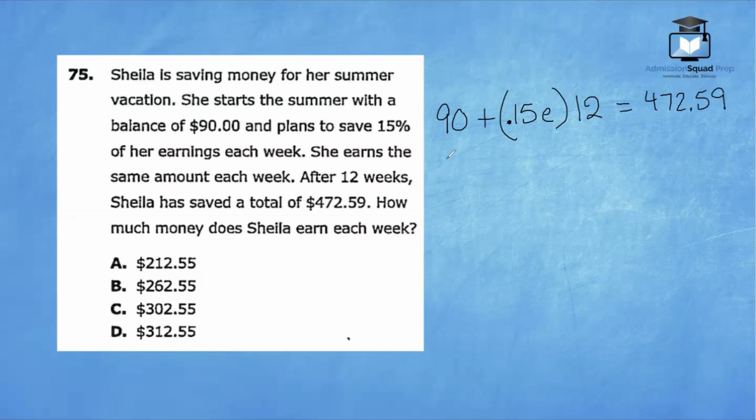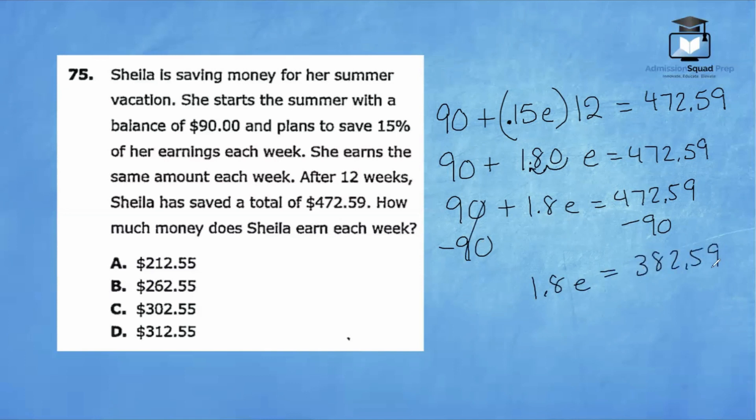Let's combine. We have 90 plus, we can go ahead and multiply 0.15 times 12. Since 15 times 12 is 180, but 0.15 has two decimal places, we can move the decimal point two places to the left here. So we now have 90 plus 1.8E equals 472.59. I'll write that one more time. Our next step is to subtract 90 on both sides. When we subtract 90, we have 1.8E equals 382.59.